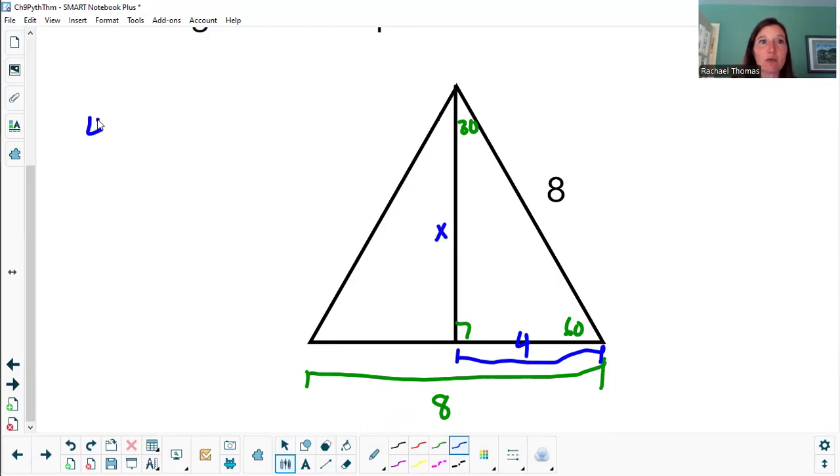And now I've got four squared plus x squared equals eight squared. I have a Pythagorean theorem problem. Four squared is 16. Eight squared is 64.